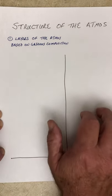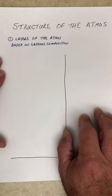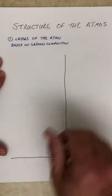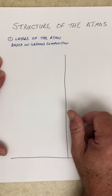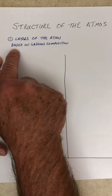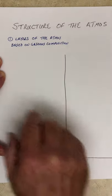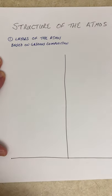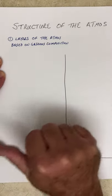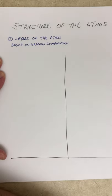All right class, now that we've looked at the composition of the atmosphere, let's take a look at the structure of the atmosphere. Meteorologists look at the structure of the atmosphere in two different ways: one way is to look at it in terms of the gaseous composition — the layers of the atmosphere based on gaseous composition — and the other way will be temperature trends, that's coming up next.